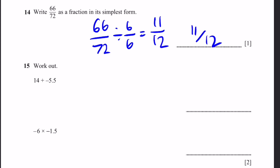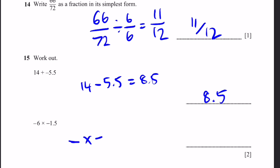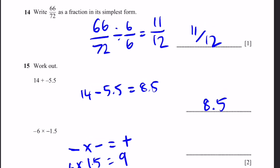Question 15. Work out 14 plus negative 5.5: that's 14 minus 5.5 = 8.5. Next, negative 6 times negative 1.5: negative times negative equals positive, so 6 × 1.5 = 9. The answer is positive 9.